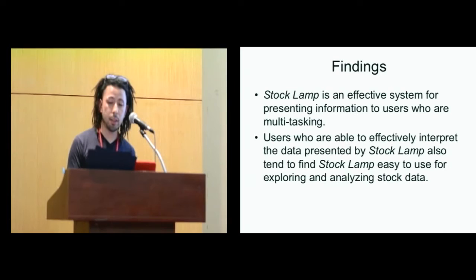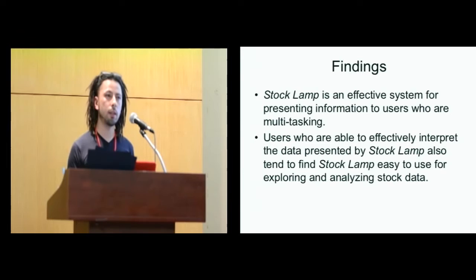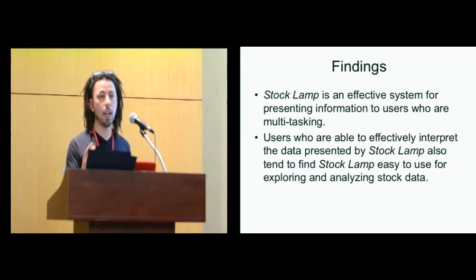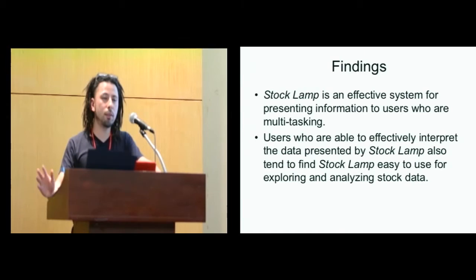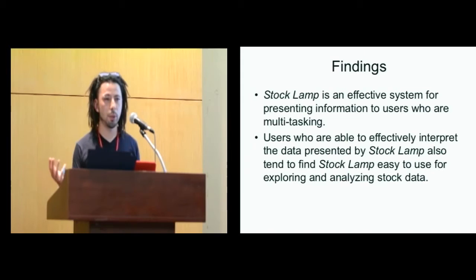Basically after all the statistics, which is in the paper, we found out two major findings. Stocklamp is an effective system for presenting information to users who are multitasking. This was actually a counter of what we actually found. When we measured the focus passive and periphery passive mode and the Stocklamp and Dashboard, the Dashboard, when people were playing whack-a-mole, their performance really went bad. That indicated that when you're multitasking, you're not going to perform well if you give them a generic solution for everybody who's focused. So in that way, Stocklamp was very successful in giving a solution for people who want to multitask.